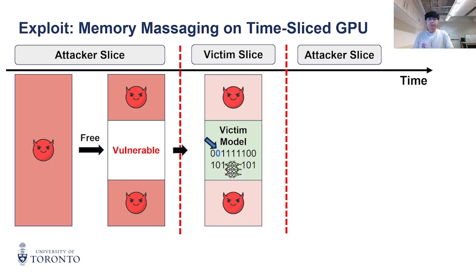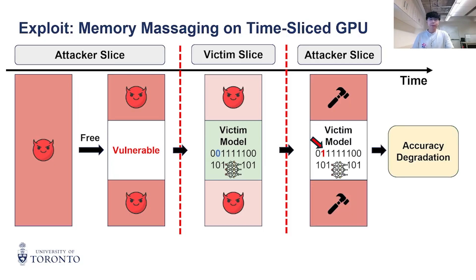This way, during the victim's time-slice, they are forced to place their model in the hole with the bit flip. Then in the next time-slice, the attacker can hammer for accuracy degradation.